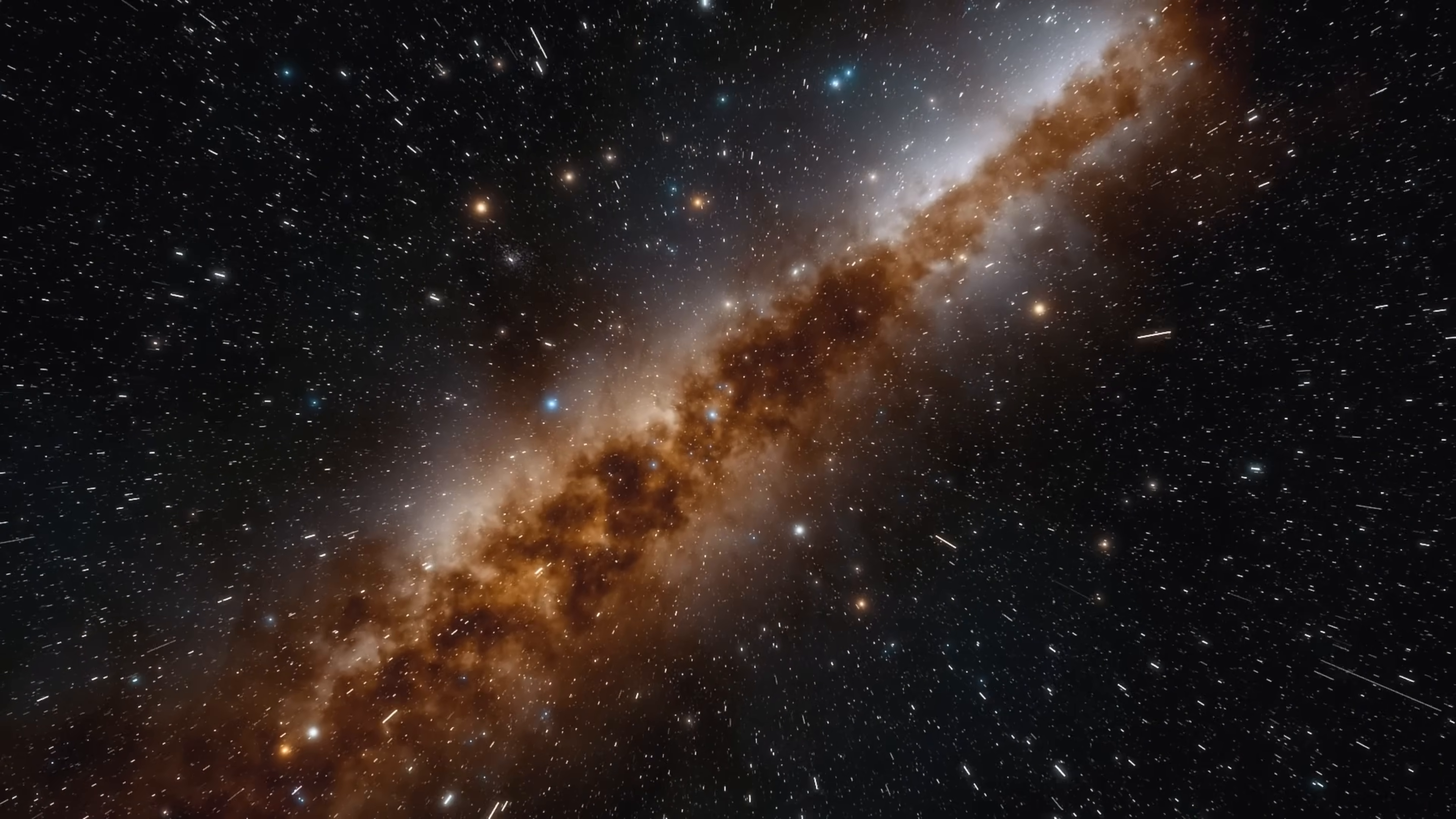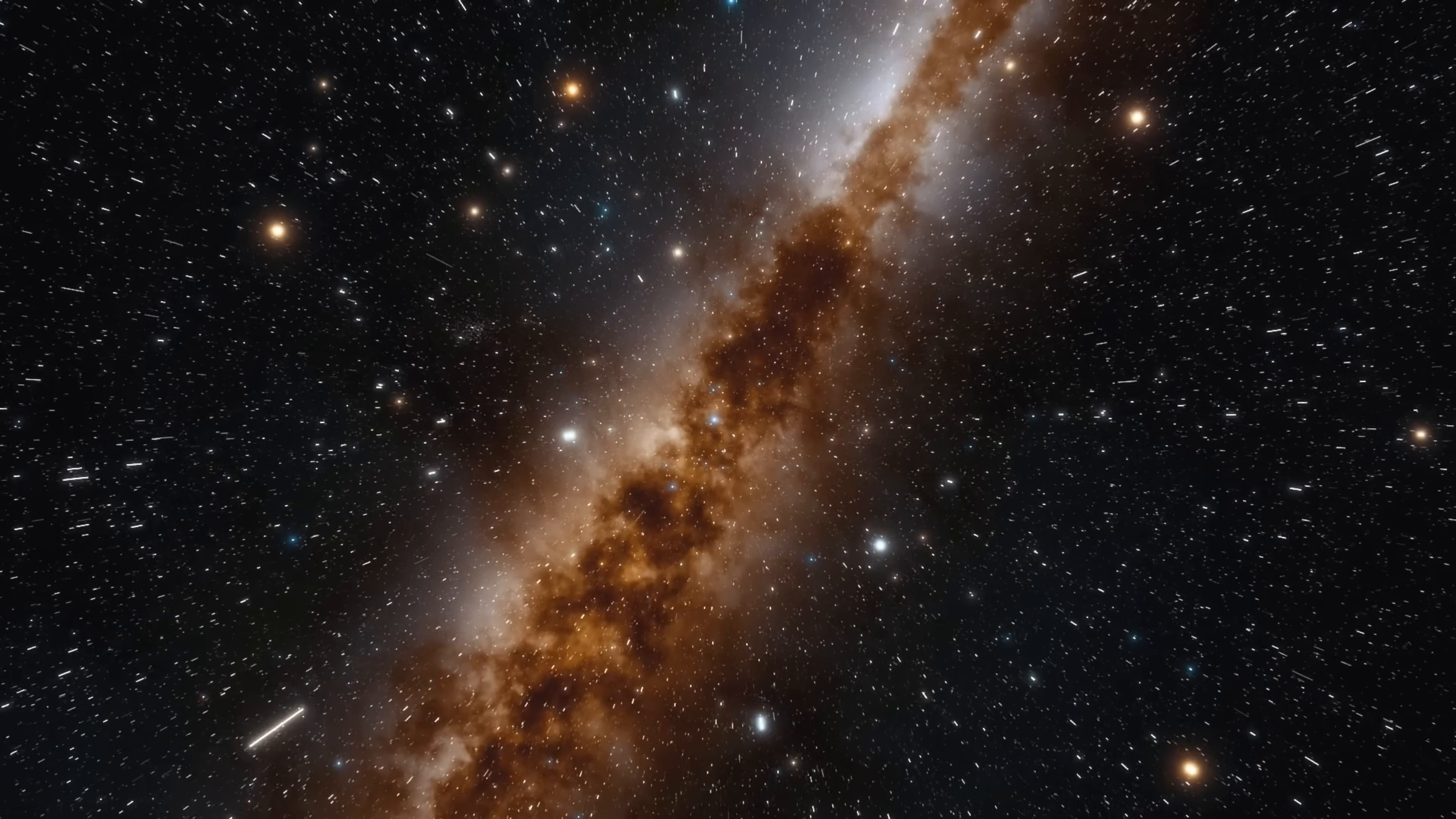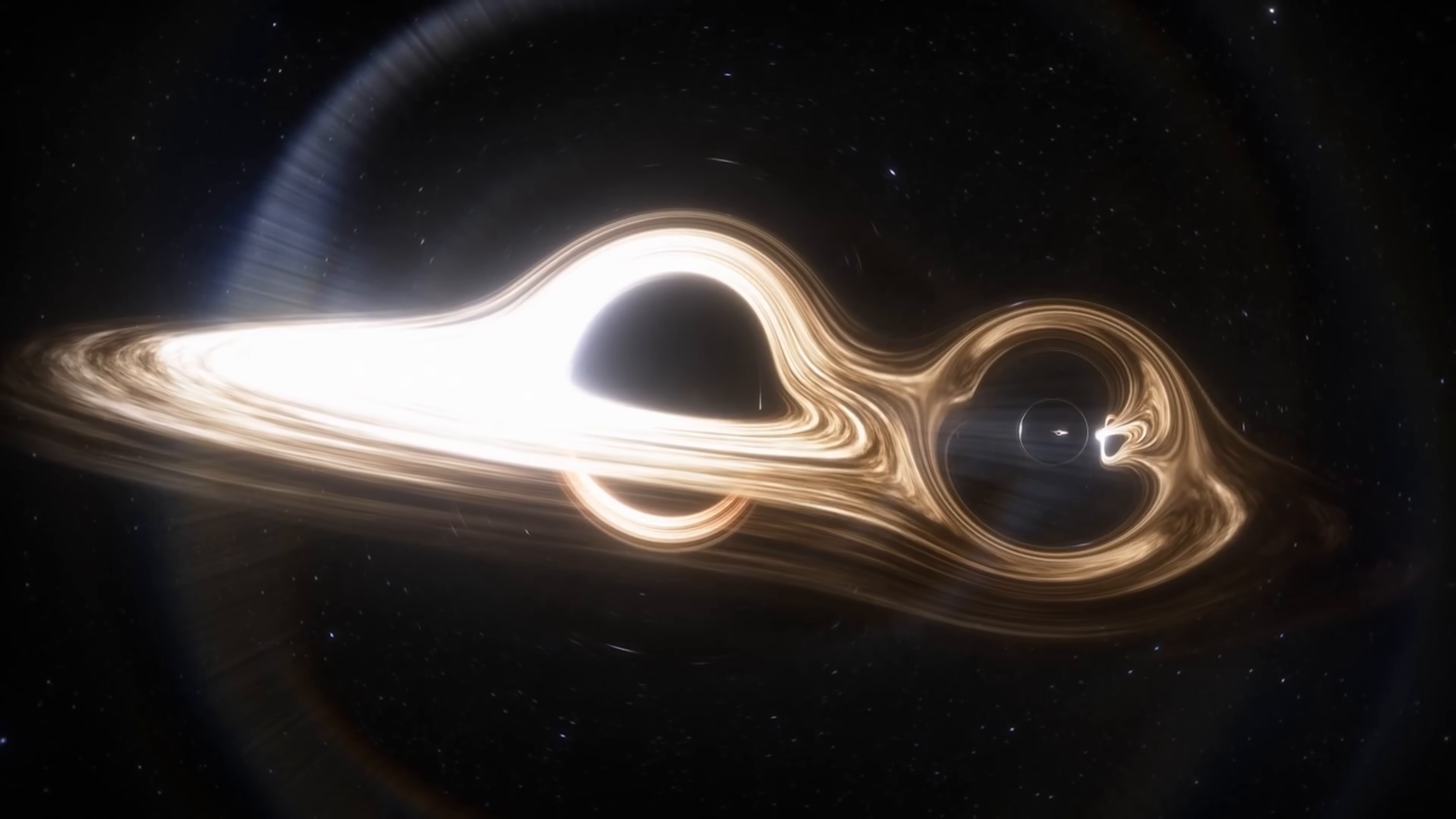The Great Attractor is a massive gravitational anomaly located in the heart of the Laniakea supercluster, a vast cosmic structure that includes the Milky Way galaxy and countless others. Its gravitational pull is so immense that it's drawing galaxies towards it at incredible speeds, despite their general recession due to the expansion of the universe.